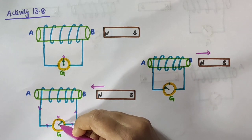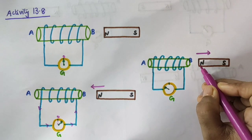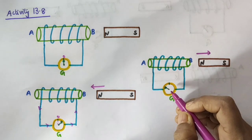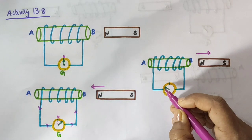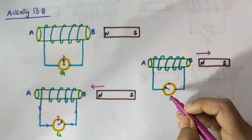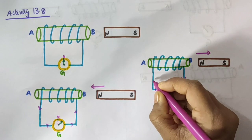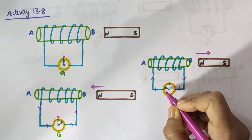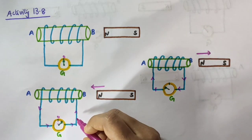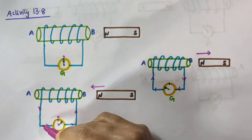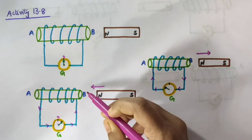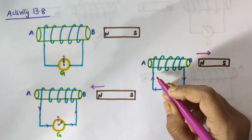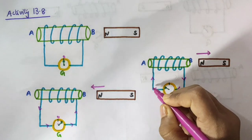Now when we move the north pole of the magnet away from the coil, the galvanometer again shows a momentary deflection, but this time the needle deflects towards the left. The deflection indicates that a current is flowing through the coil AB. But deflection to the left indicates that the direction of current is opposite to the first case — when the north pole was moved towards end B of the coil.